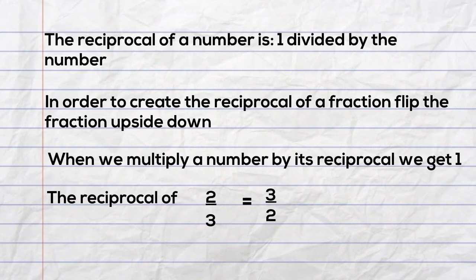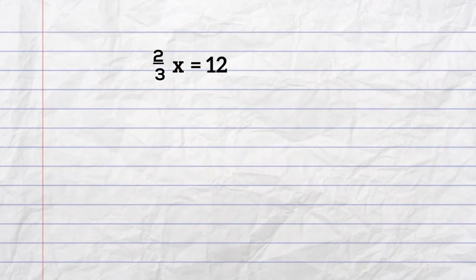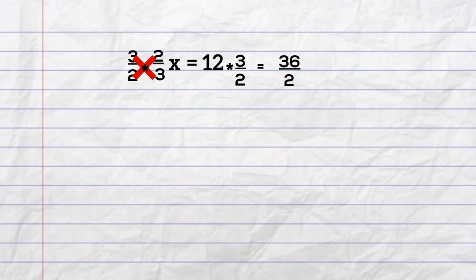So I will multiply 2/3 times 3/2, and I will complete this on both sides. On the left, the fractions cancel, and I am left with x. And then 12 times 3 is 36, and 1 times 2 is 2. I can then reduce, so x is equal to 18.